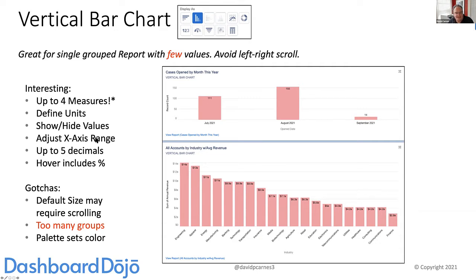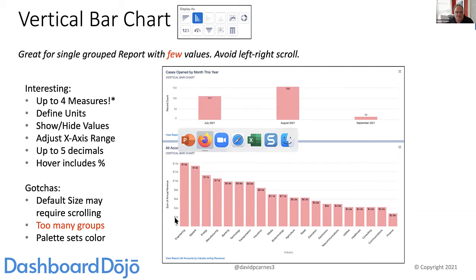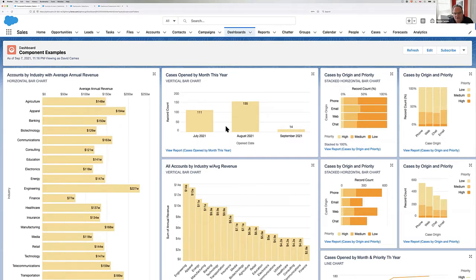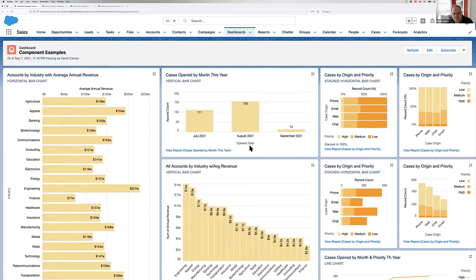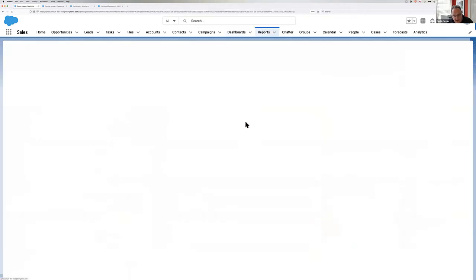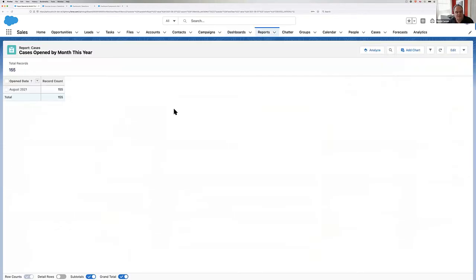Again, we can have up to four measures, adjust the axis, and have up to five decimals. When hovering over, it shows percentages, which is nice. The color palette comes from the dashboard color palette. In the dashboard, I've got two vertical bar charts. If I hover over them I can engage with them, and if I click on it, it'll filter down to that value in the underlying report. So for cases open by month — if I'm curious about August, I can click on that and drill right down to August from the dashboard.